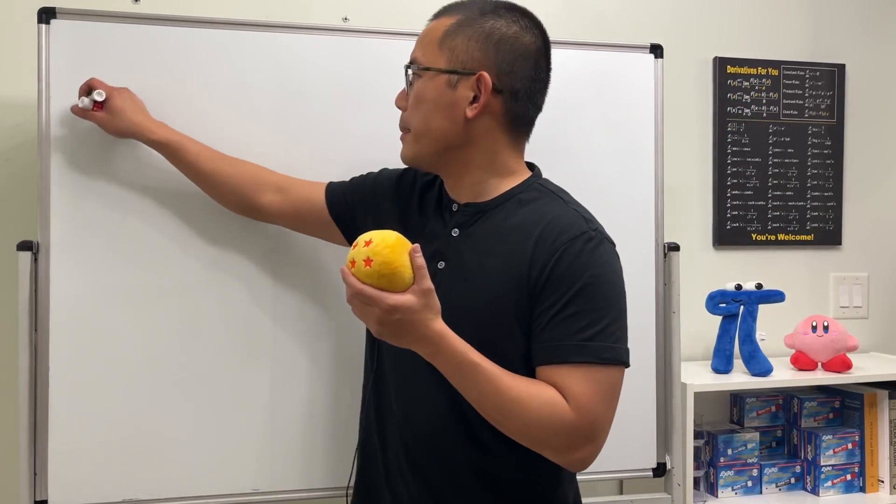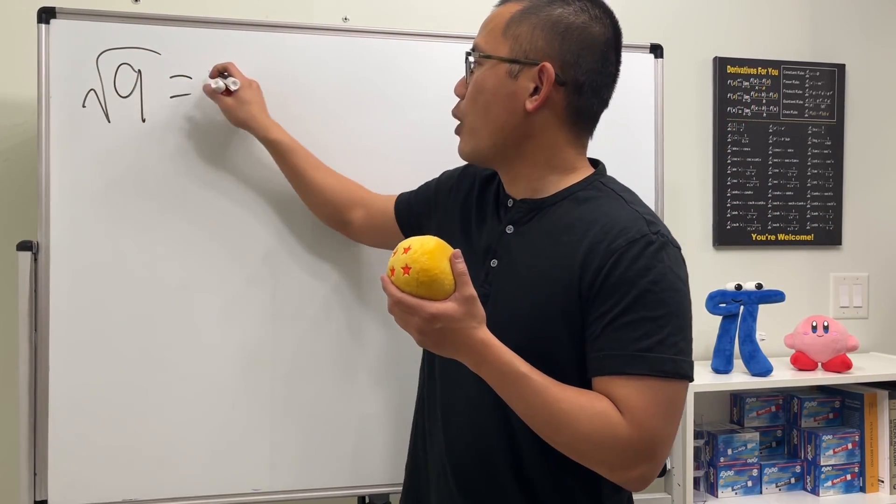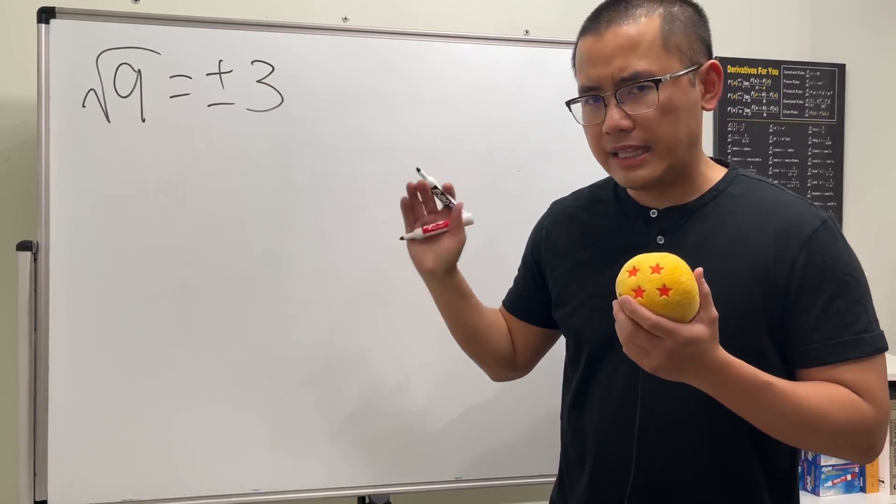Here's the question: a lot of people have been saying that square root of nine is equal to both plus and minus three. Well, if this is the case, then I would like to ask you guys this.